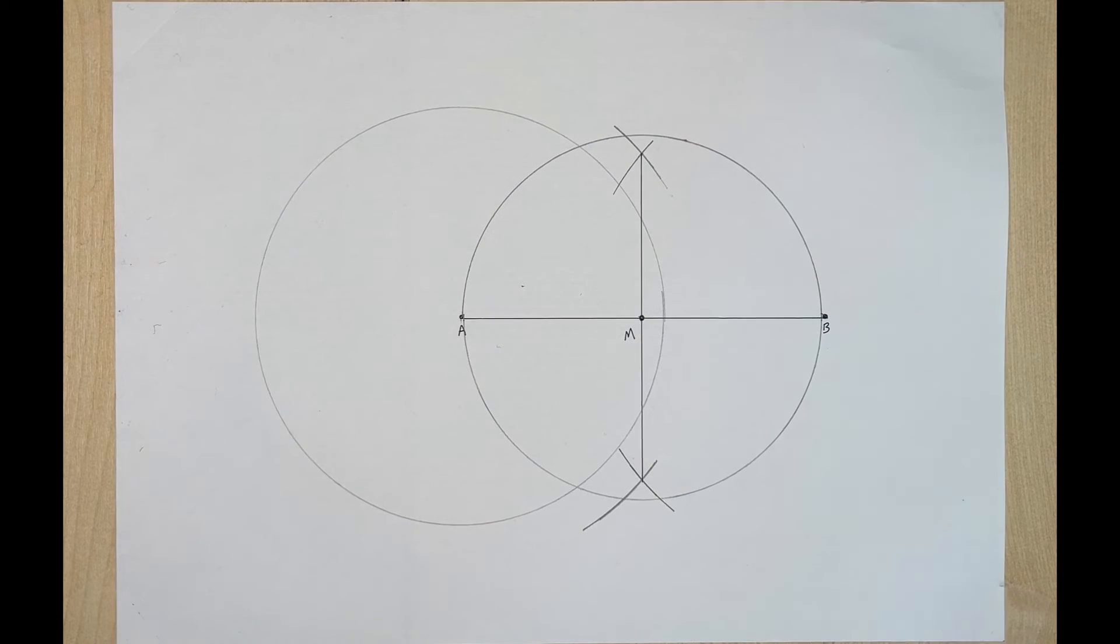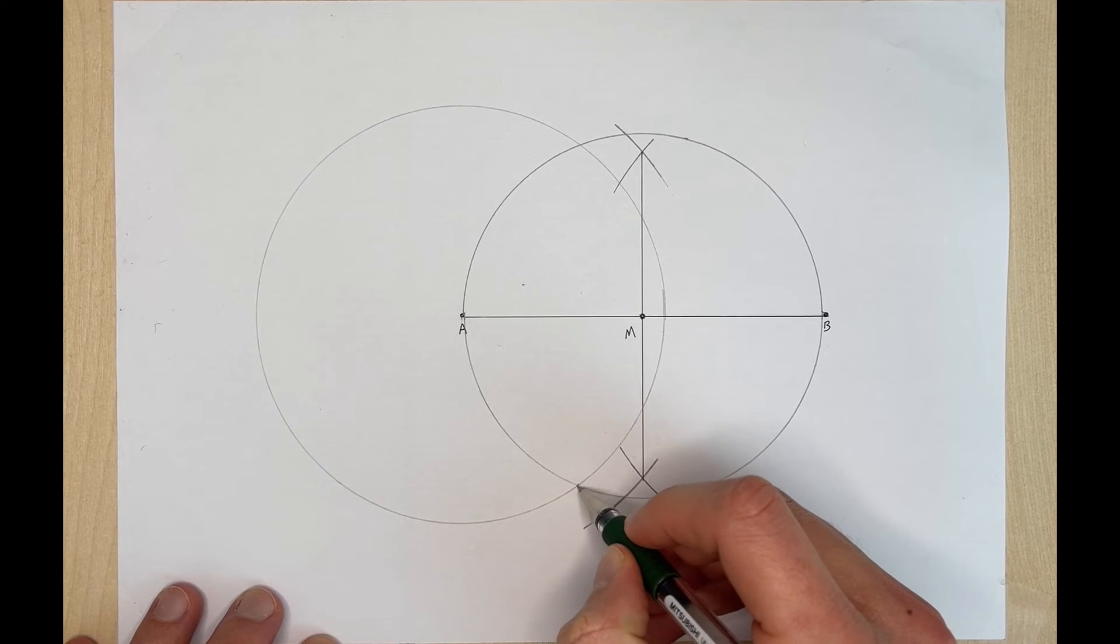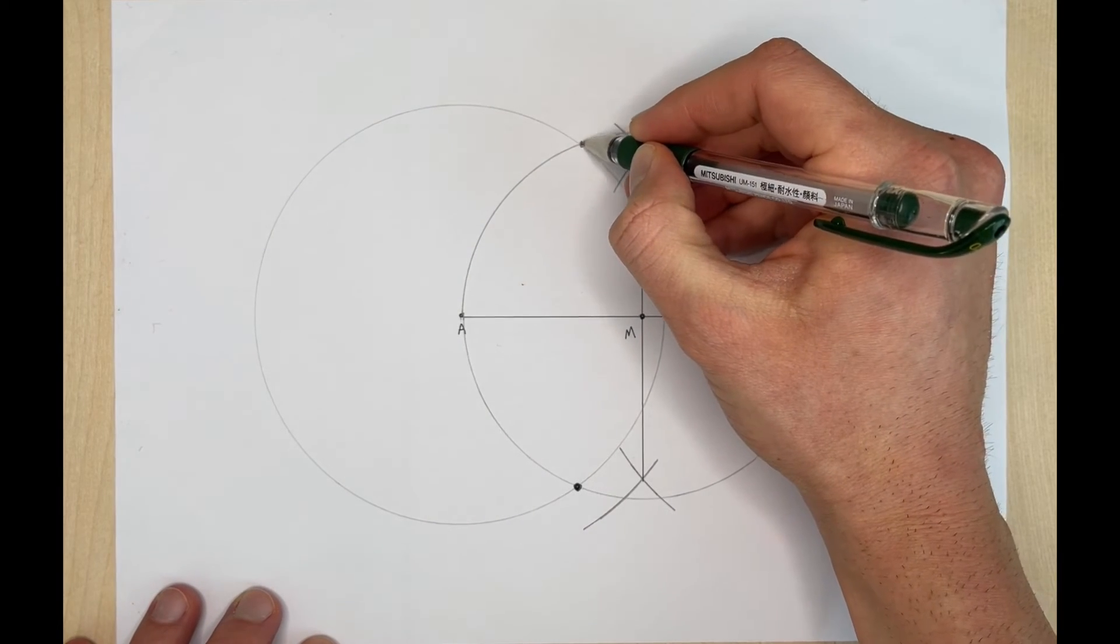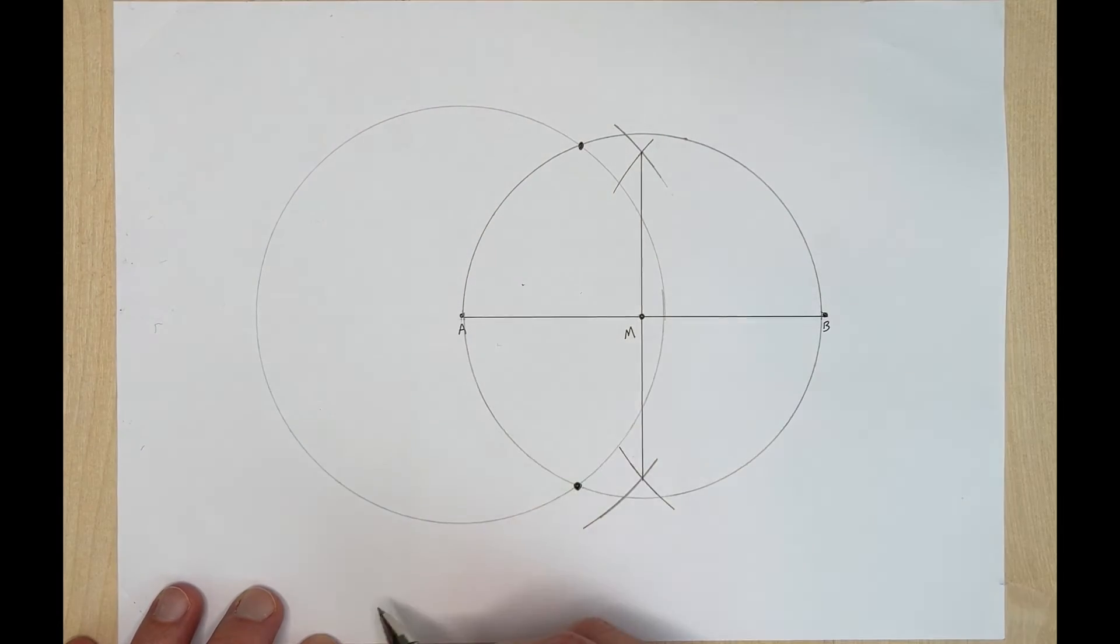Okay so now what we can do is one of our intersections that we had and we'll do this one here at the bottom where these two circles intersect with each other. So we do have two. So you could draw this tangent line through either one of these two points here.